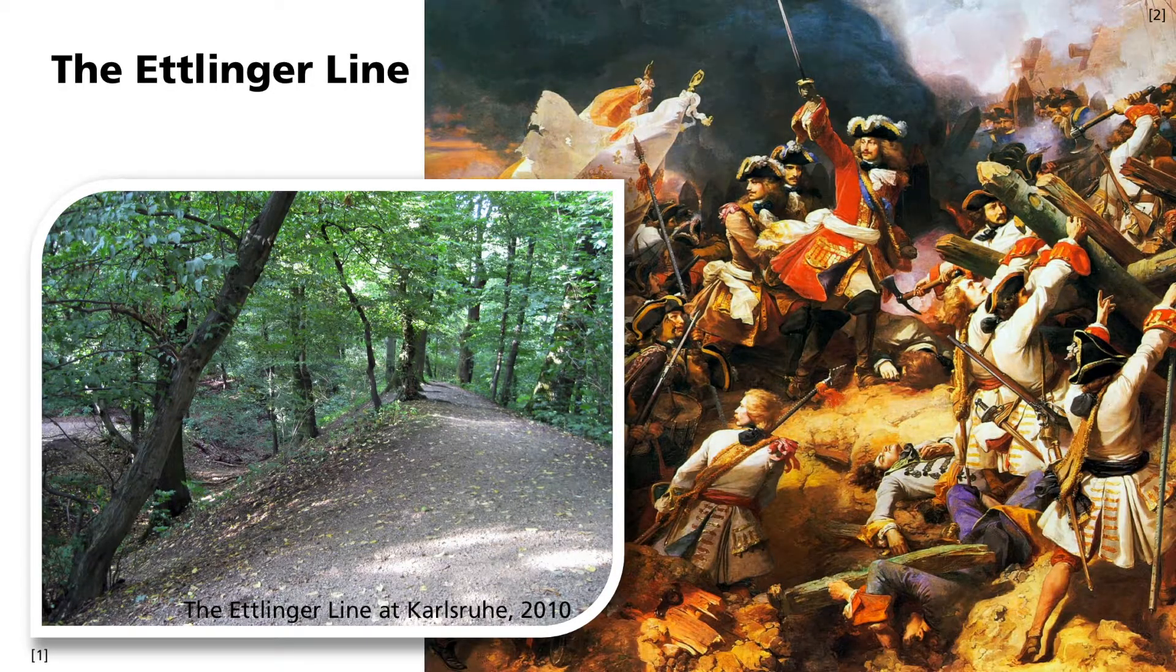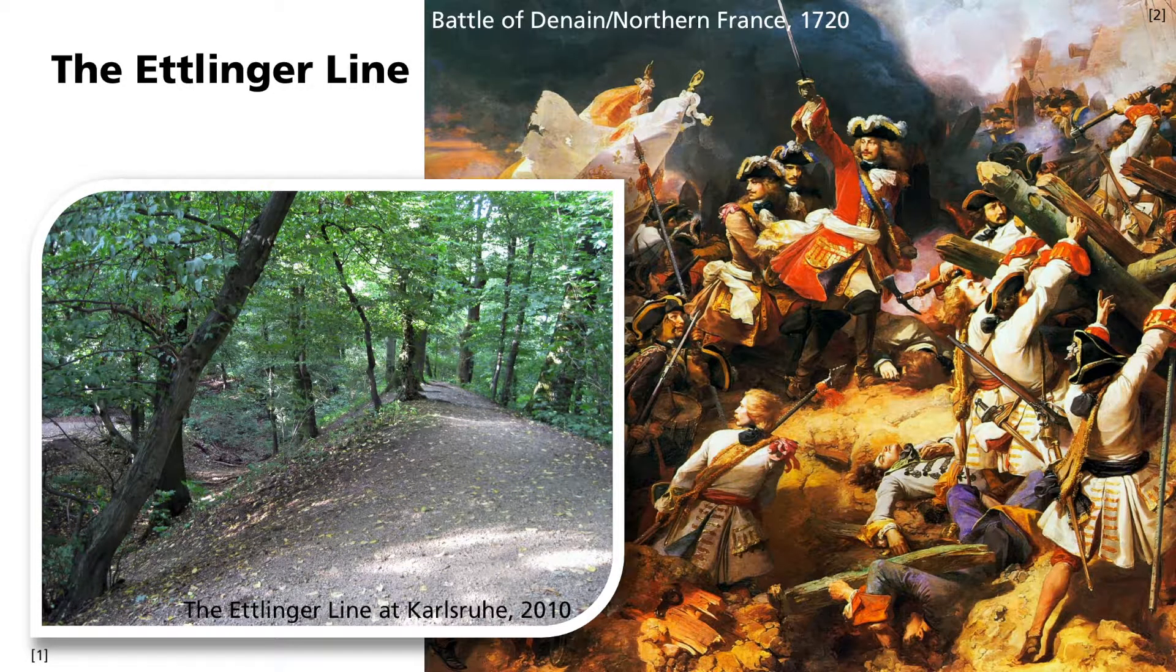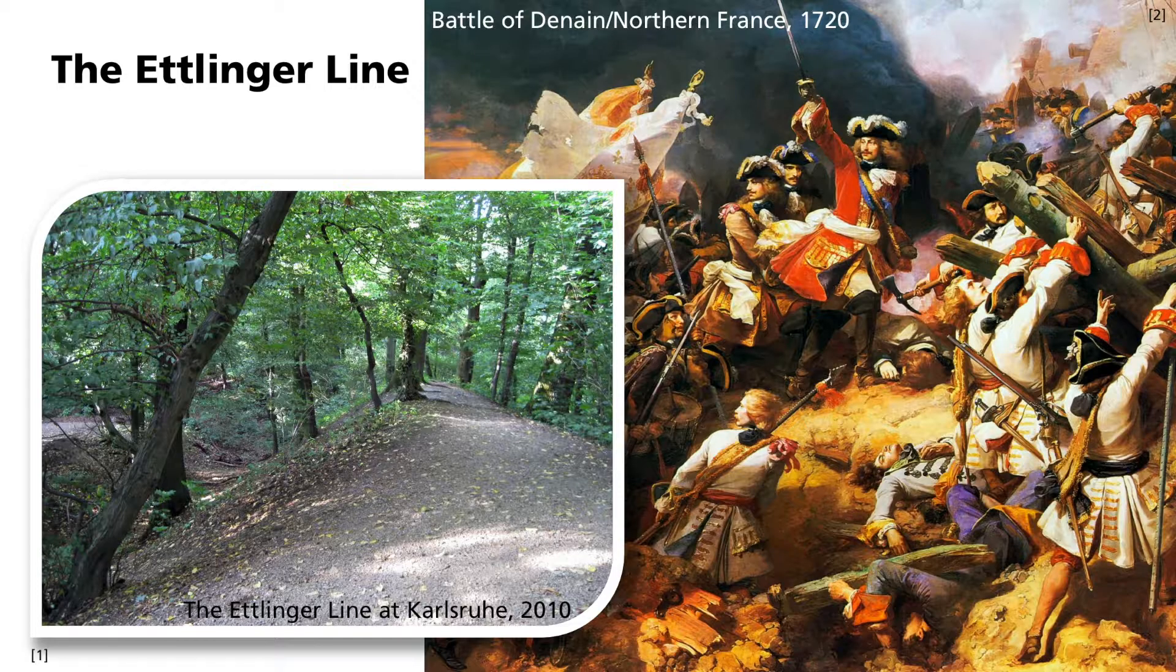The line of defense consisted of ramparts and trenches and was fortified in parts with palisades. The line was nevertheless quickly overcome and the French troops then directly leveled the ramparts and trenches in many places. In few places, however, the fortification is still visible.